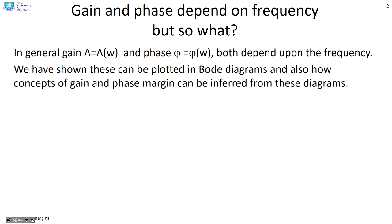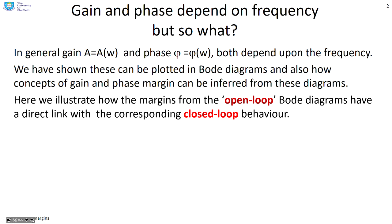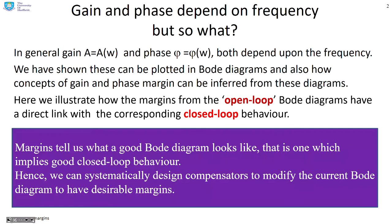So what have we discovered so far? In general, the gain and the phase both depend upon frequency. We've shown how these can be plotted in both diagrams, and we've also introduced the concepts of gain and phase margin. What we want to do now is illustrate how the margins from the open loop Bode diagrams have a direct link with the corresponding closed loop behaviour. Margins tell us what a good Bode diagram looks like — one which implies good closed loop behaviour.